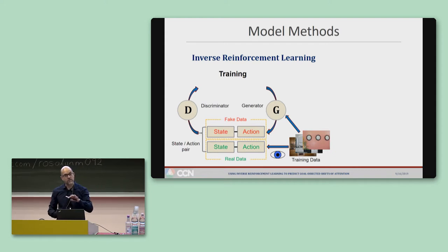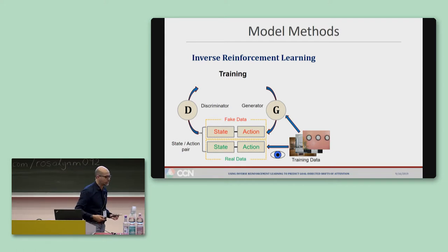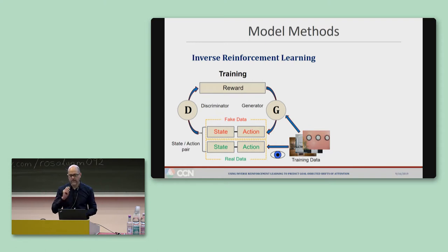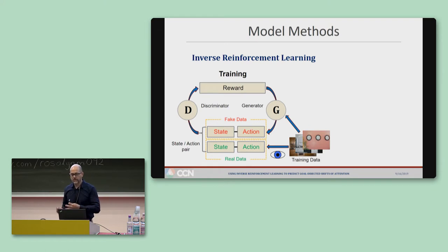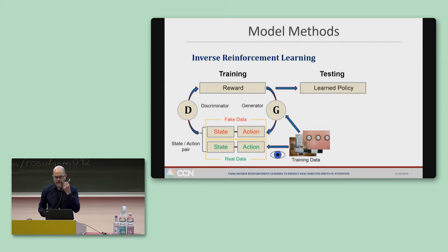We also have real eye movements from our training data, so there is a real state-action pair for the same image. The discriminator takes the fake data and real data and tries to guess which is which. This starts off easy because the generator produces random eye movements, but each time the discriminator guesses wrong, that state-action pair from the generator is rewarded and more likely to be generated in the future. When you iterate this over all training data, the generator becomes increasingly good at fooling the discriminator, producing increasingly human-like data that is difficult to discriminate from real.